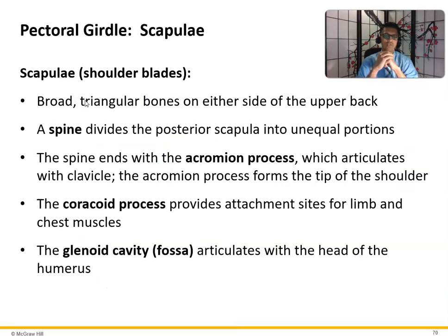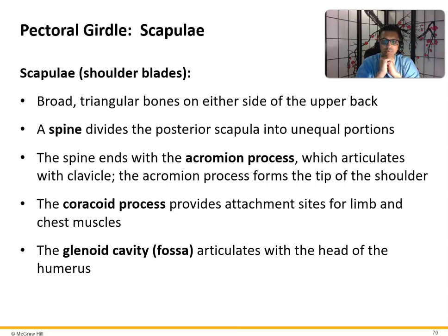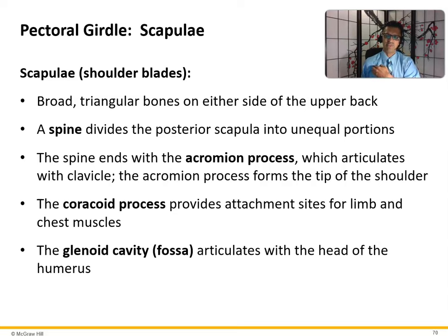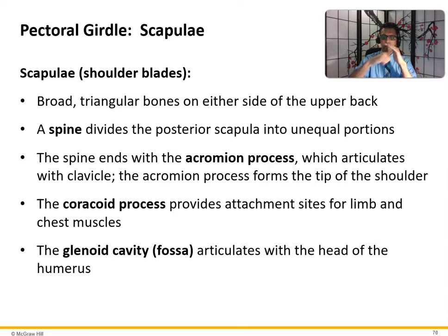The scapula, or shoulder blade, is a broad triangular bone on either side of the upper back. A spine divides the posterior scapula into unequal portions. The spine ends with the acromion process, which articulates with the clavicle and forms the tip of the shoulder. The coracoid process, slightly lower, provides attachment sites for limb and chest muscles. The glenoid cavity or fossa is where the head of the humerus fits.